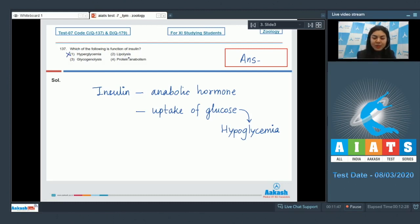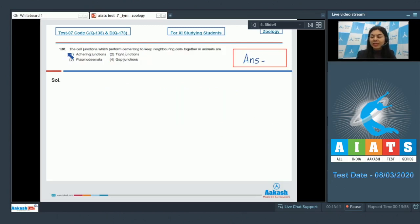Option number three, glycogenolysis, is breakdown of glycogen into glucose which would lead to again hyperglycemia, so this is also incorrect. Option number four, protein anabolism. Insulin inhibits proteolysis and in fact factors like IGF promote protein anabolism. So option number four is the right answer here. The function of insulin would be option number four, protein anabolism. The correct answer is option number four.